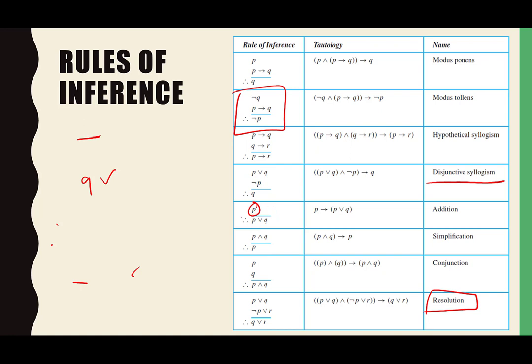If P and Q is true, then we also know P is true. What else do we know? Q is also true. If we know P and Q is true and P and Q is true, we know each one individually. That's all that top line is saying anyway — it's just saying P and Q.